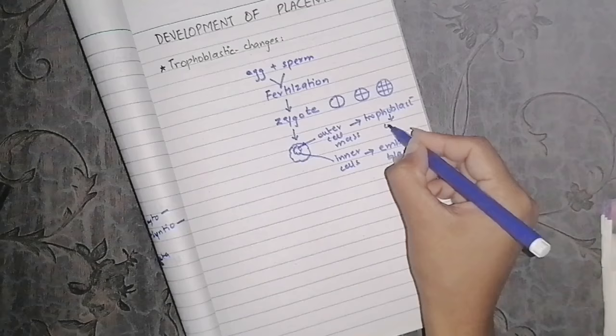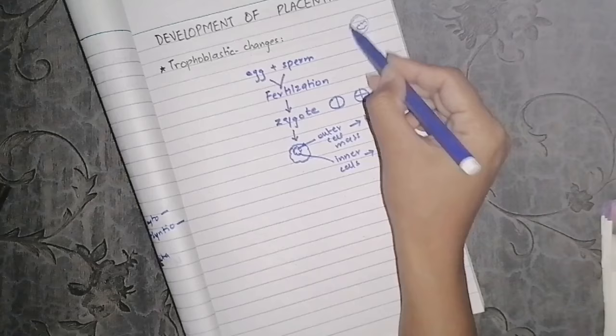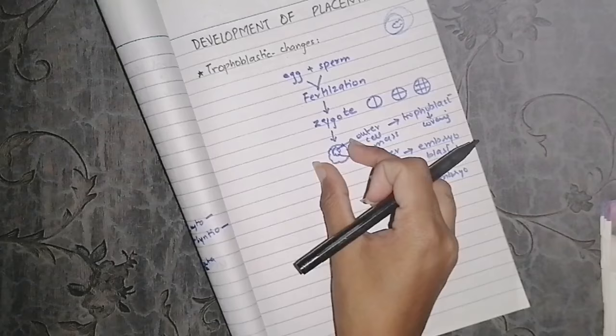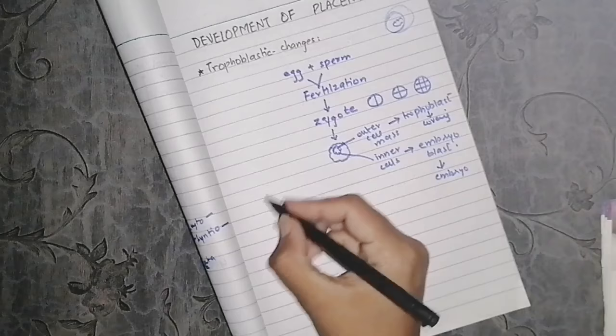Now, the outer cell mass is the trophoblast. What will it become? It will form coverings for the embryo — it has a lot of coverings. These are all trophoblastic in nature. After compaction, we also have a blastocoele cavity. We won't focus too much on that.